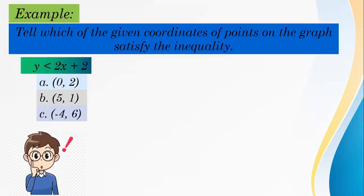Tell which of the given coordinates of points on the graph satisfy the inequality y less than 2x plus 2. The given coordinates are: (0, 2), (5, 1), and (-4, 6).